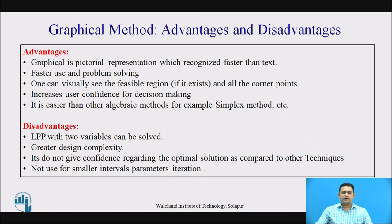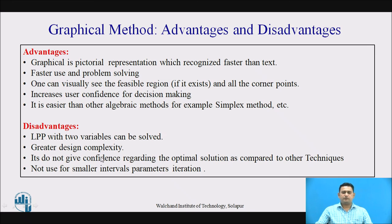Now let us see the advantages and disadvantages. The advantage is that it is a graphical representation — a picture representation — it is faster to solve and understand. We can visually see the feasible region and make decisions confidently, and it is more simple compared to other techniques. The disadvantages are: the LPP must have only two variables to be solved by this method, we cannot solve problems with a smaller interval of parameter changing, and it is not suitable for making decisions with more complex cases.